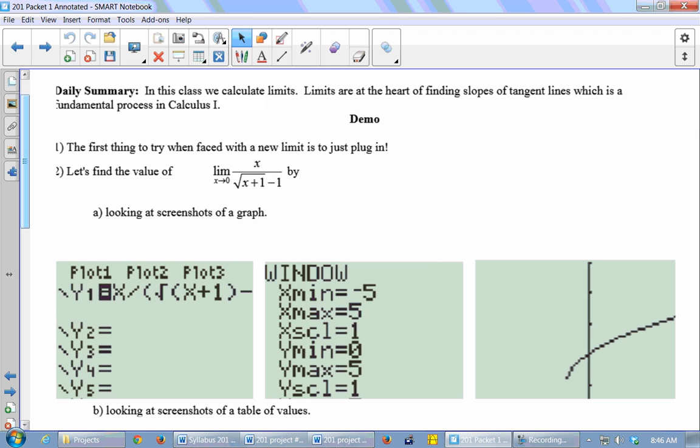So what happens if you try to put a 0 in here for x? You get 0 over 0. You don't get 0. 0 over 0, and that's undefined. You can't put a 0 in a denominator. So if I just plug in, I get 0 over 0 undefined.